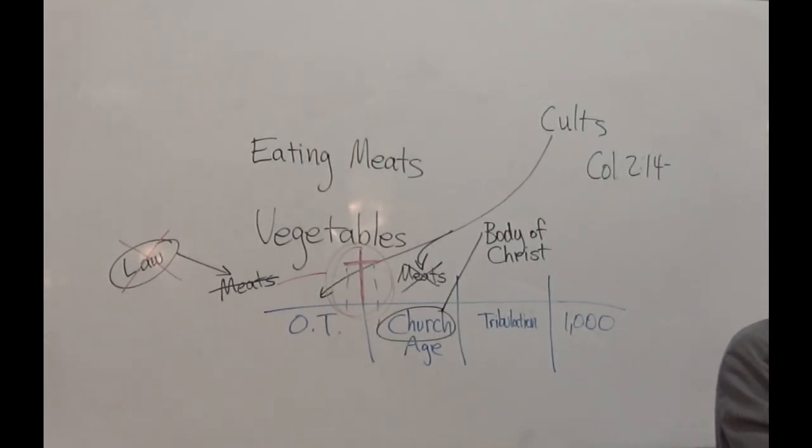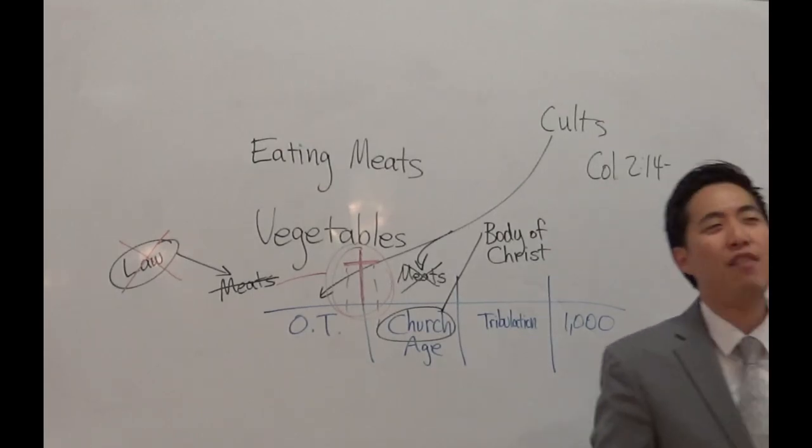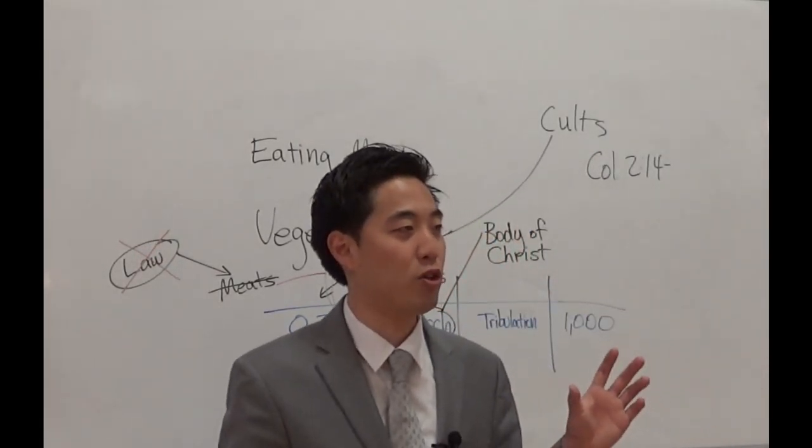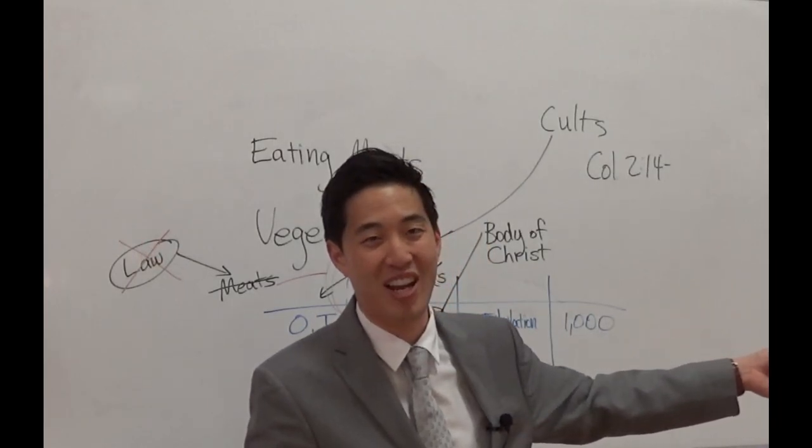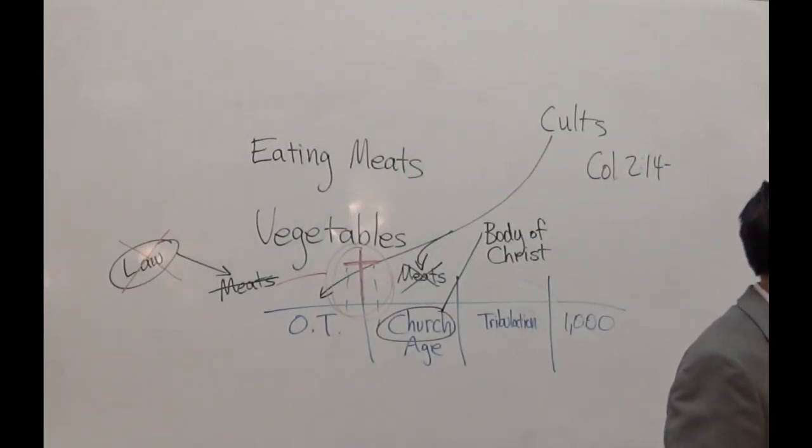Let's look at the book of 1 Timothy chapter 4. Verse 1. The last part of verse 1 says doctrines of devils, correct? But look at verse 3. Forbidding to marry, does that sound Catholic to you? And commanding to abstain from meats. Does that sound Catholic to you? Which God hath created to be received with thanksgiving of them which believe and know the truth. Seventh-day Adventists are really anti-Catholic. They hate the Catholic church. But look at this. These Seventh-day Adventists, some of them who teach that doctrine, they join the Catholics right here. How about that? They're closer than you think.